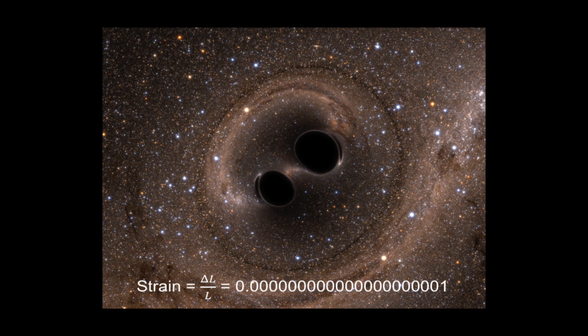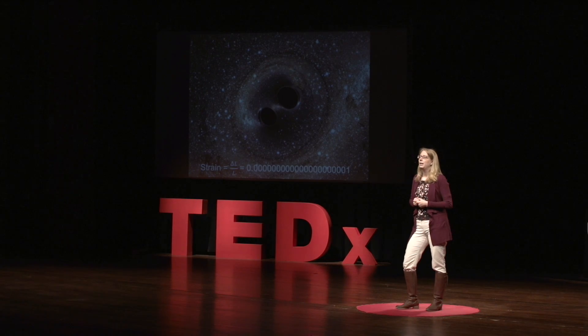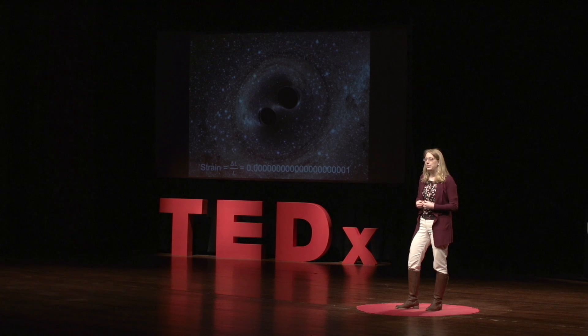However, the strain from gravitational waves, from these black holes that collided, was 10 to the minus 21. This is an extremely tiny number. The way that we would need to measure this extremely tiny number is by building some of the most precise rulers ever developed, that were not in existence to date. It would be equivalent to needing to measure a change in the distance from us to the nearest star of less than the width of a human hair.